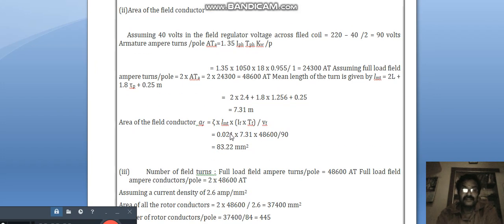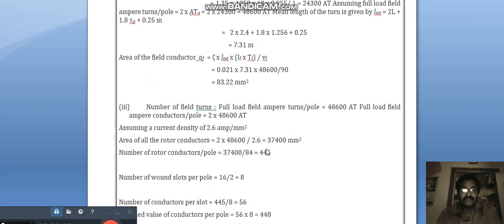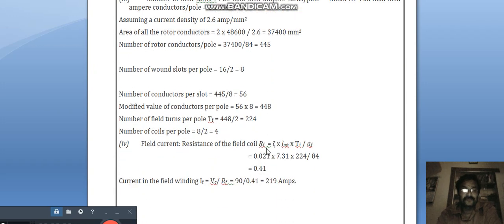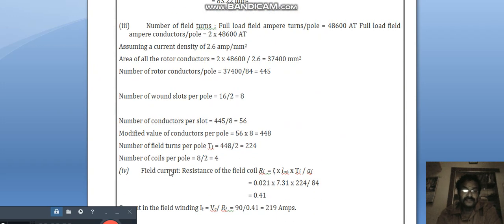Area of field conductor A_f is equal to ρ × LMT × I_f × T_f / V_f. Here V_f value, we found 90. And T_f 48,600 we found and I_f value 7.31 and LMT 0.021. So, we will get 83.22 millimeter square.